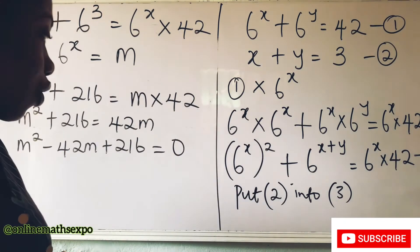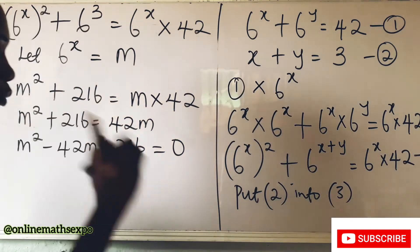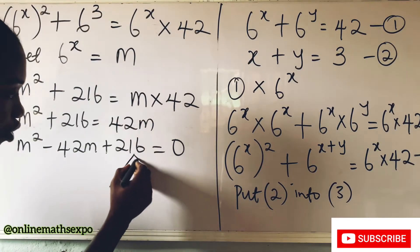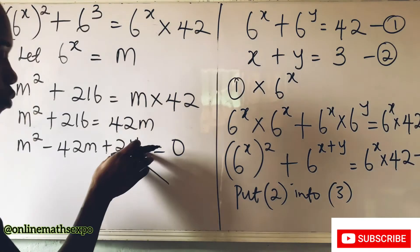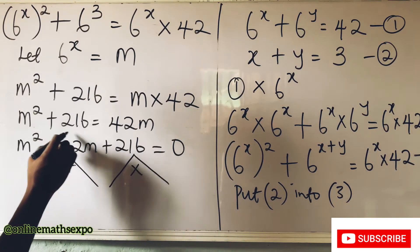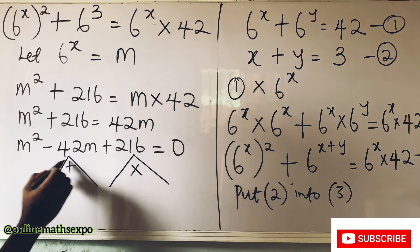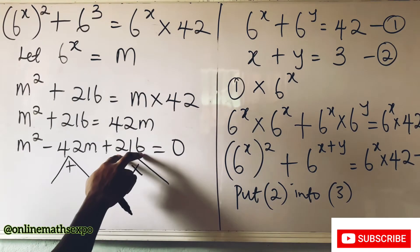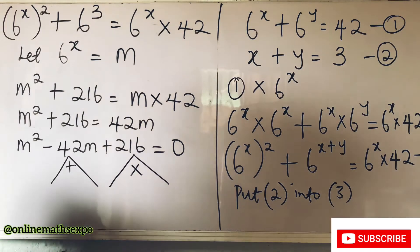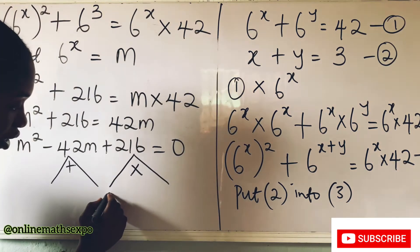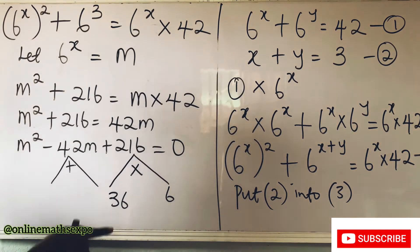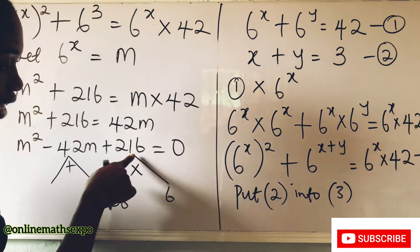Let's solve this quadratic by factoring. Since the coefficient of m squared is 1, we need two factors of 216 such that when multiplied they give positive 216, and when added they give negative 42. What numbers could those be?